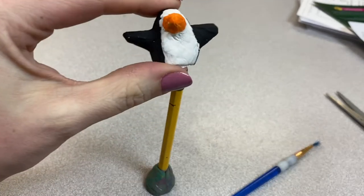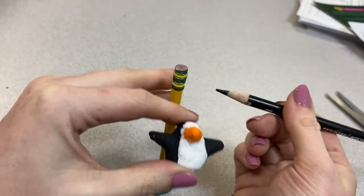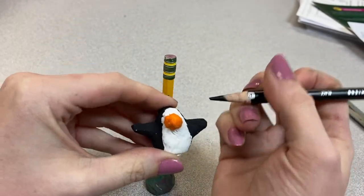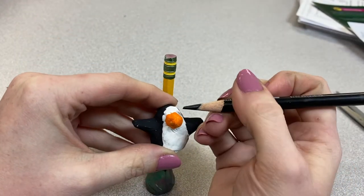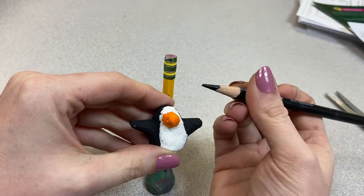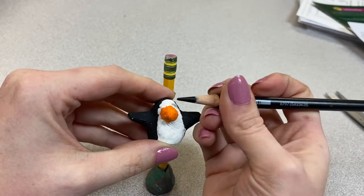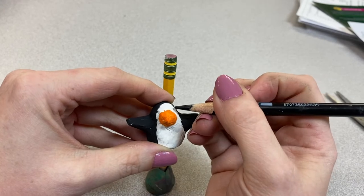Then the last thing I'm going to do is add little eyeballs and for that I am going to use a colored pencil. Just to get the tiny details I could use paint but if you're doing something super tiny I would suggest using a colored pencil.